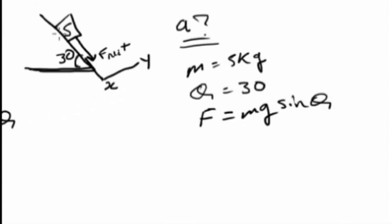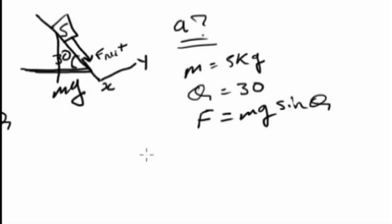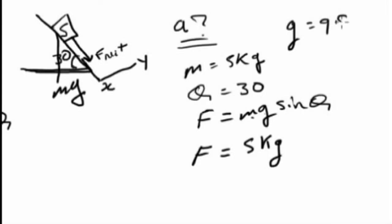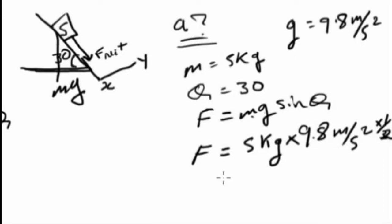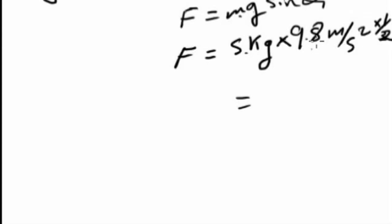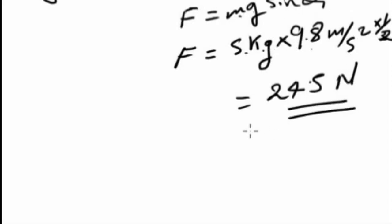Okay, so gravity along the surface — F is equal to M times G. Mass is 5 kilograms, gravity is equal to 9.8 meters per second squared. So: 5 times 9.8 times sin(30°), and sin(30°) is one-half. So we have 24.5 — that gives us 24.5 Newtons.